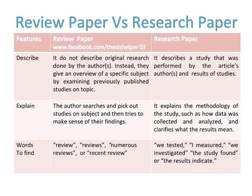Review articles do not describe original research done by the authors. Instead, they give an overview of a specific subject by examining previously published studies on the topic, while research articles describe a study performed by the article's authors and the results of that study. In a review paper, the author searches and picks out studies on a subject and tries to make sense of their findings, while a research paper explains the methodology of the study, such as how data was collected and analyzed, and clarifies what the results mean.